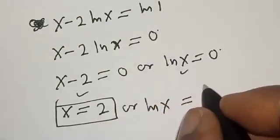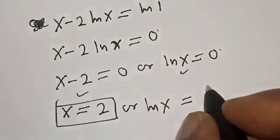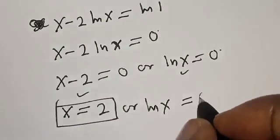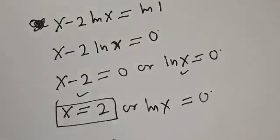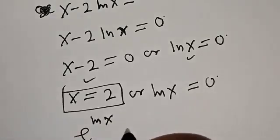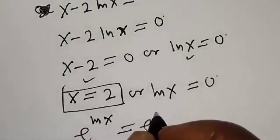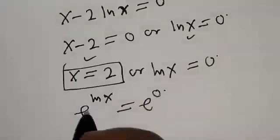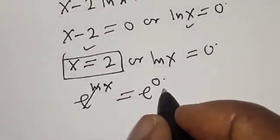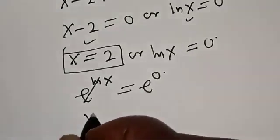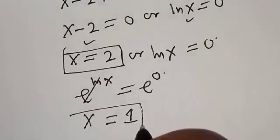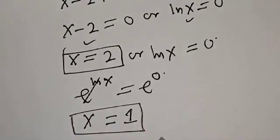Raising both sides as a power of e, we have e raised to the natural log of s is equal to e raised to power zero. The e and natural log cancel, and e raised to power zero is equal to one. So s is equal to one — that is the second value of s.